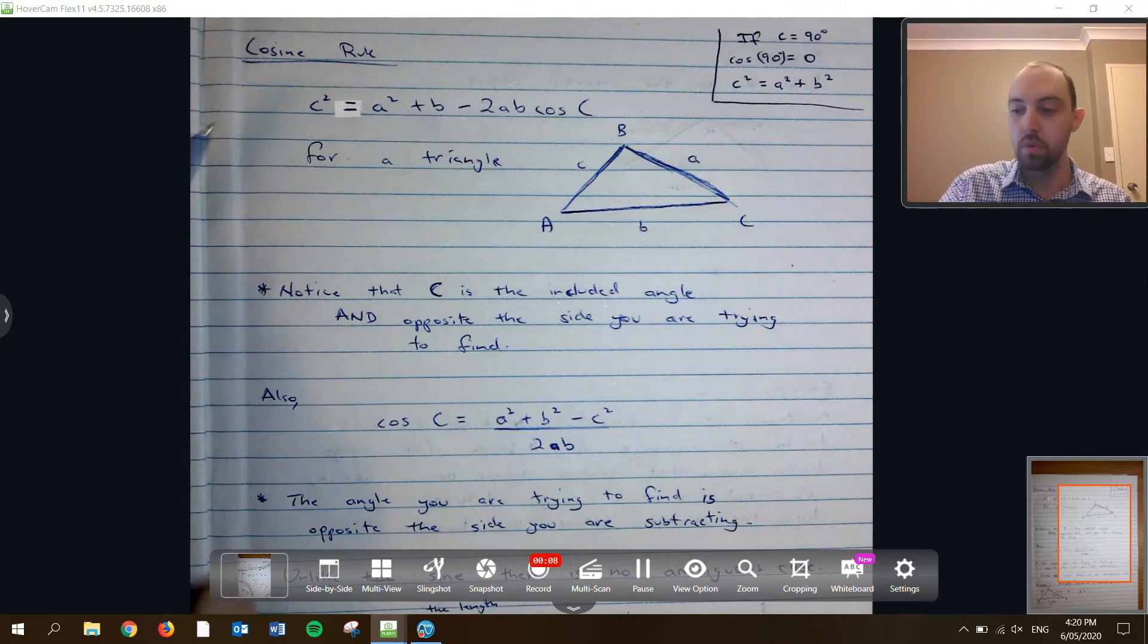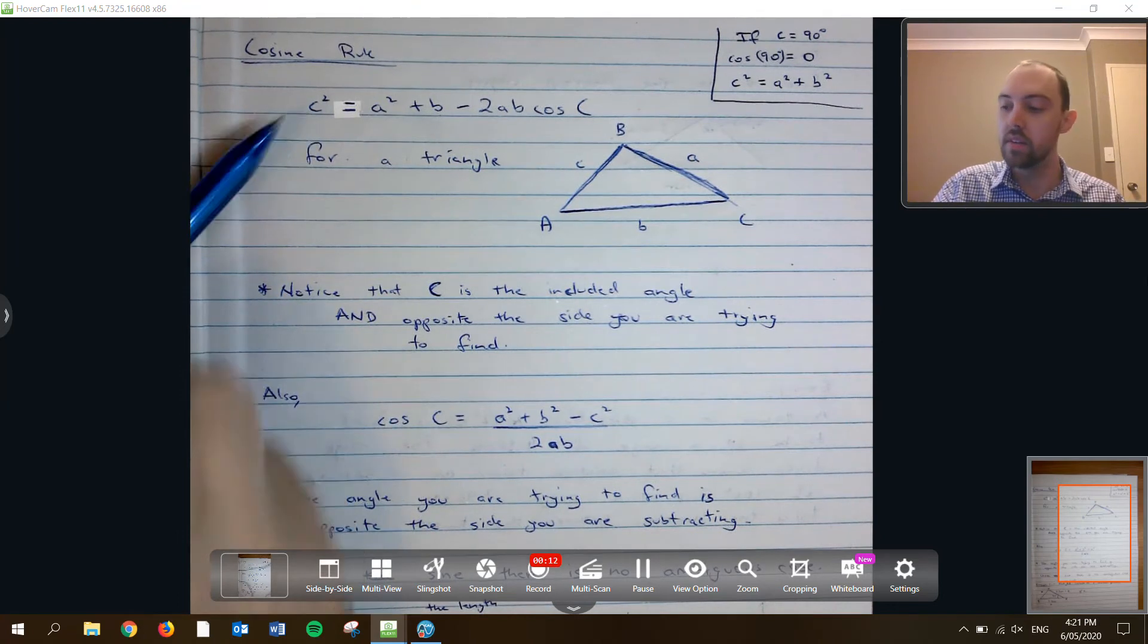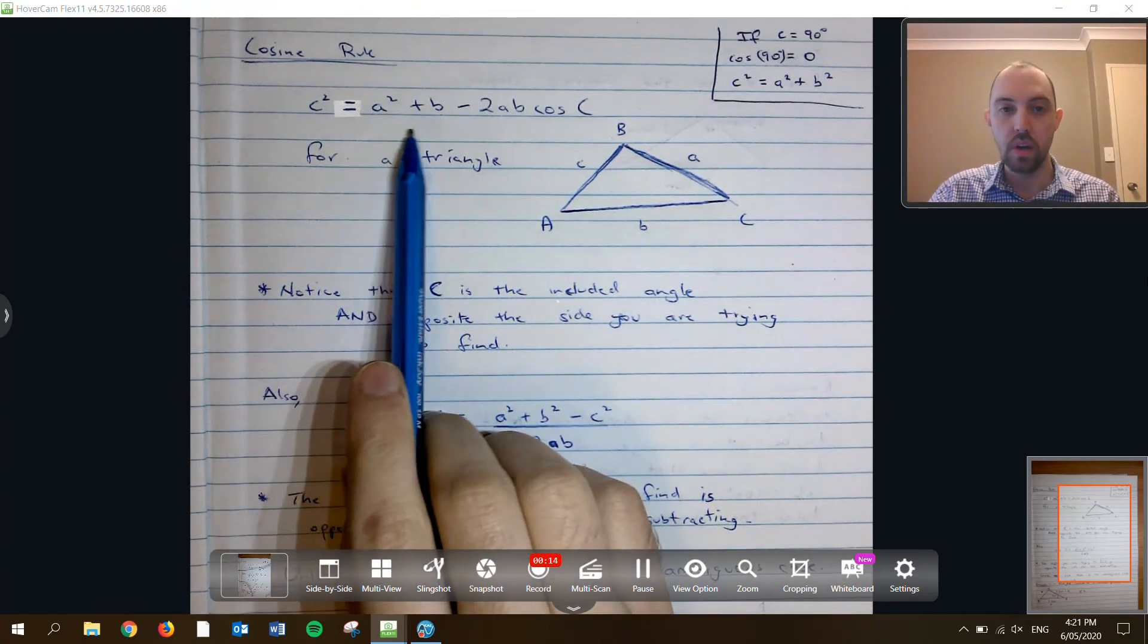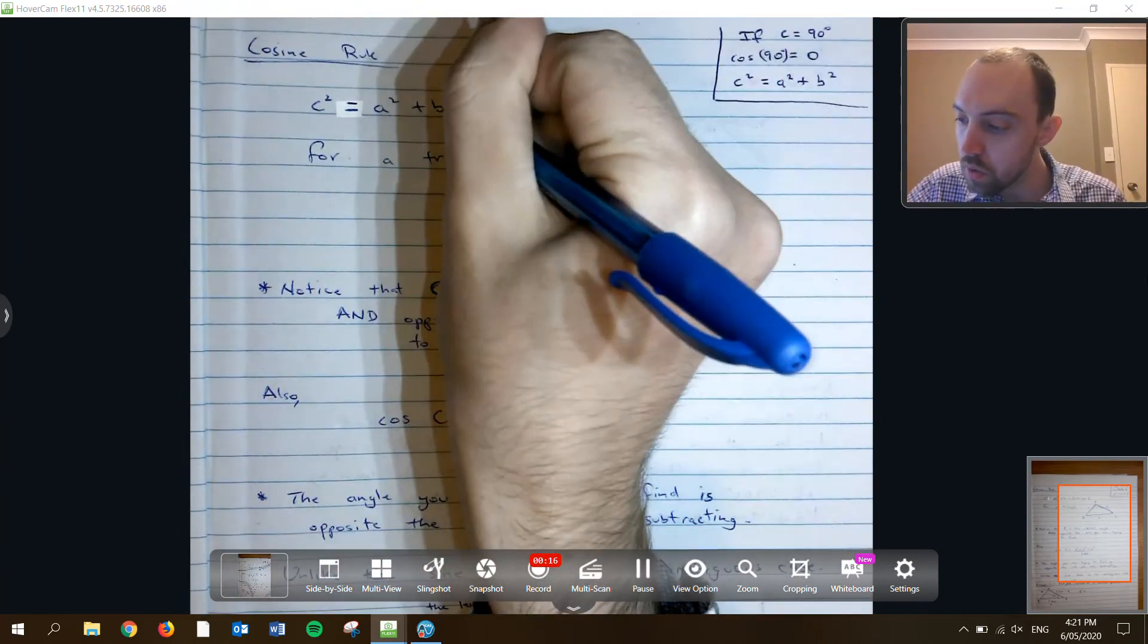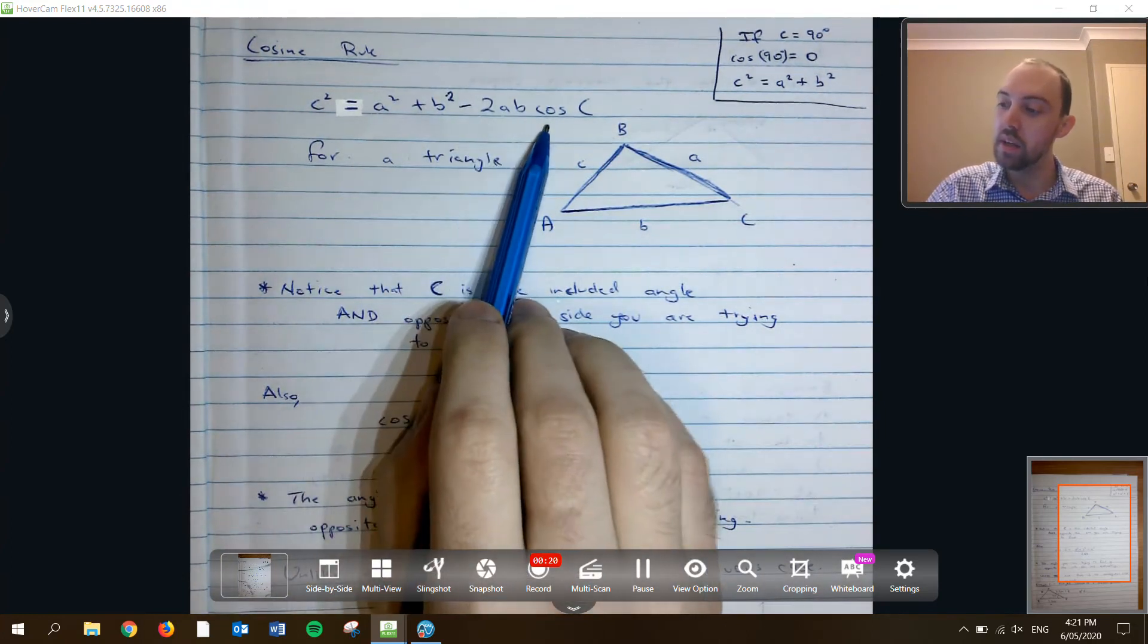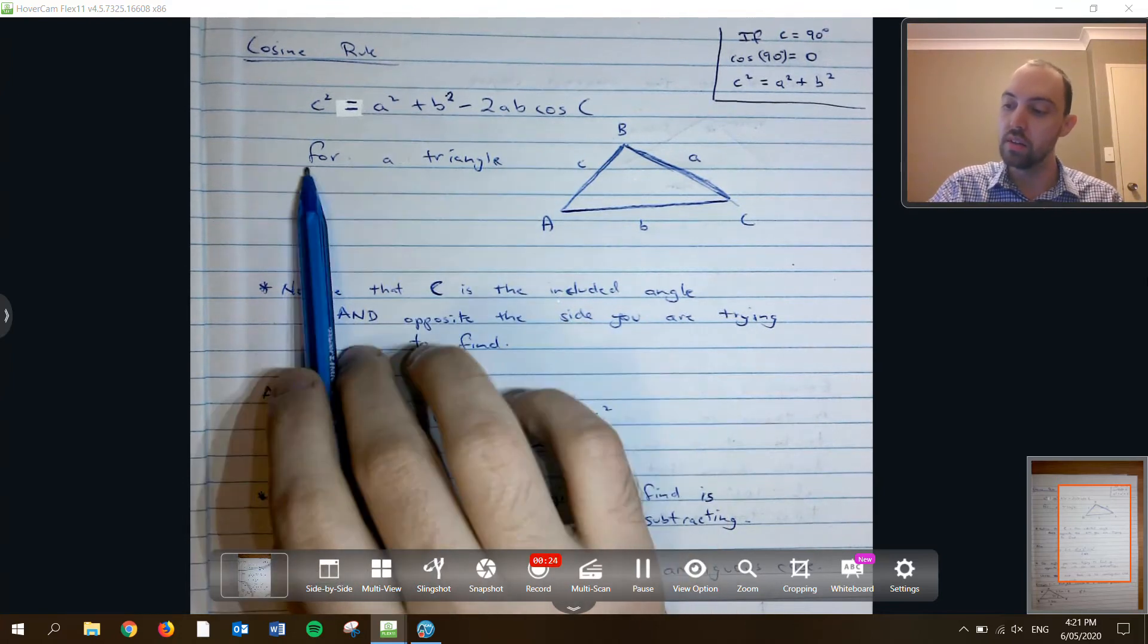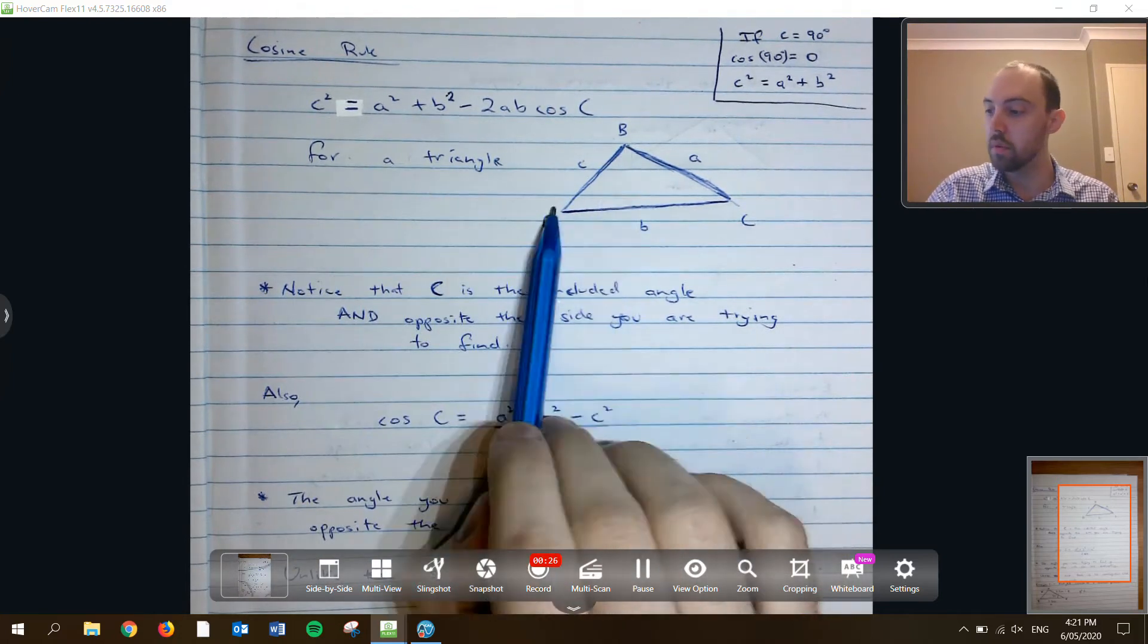The cosine rule which I've written first here is c squared is equal to a squared plus b squared, take 2ab times the cos of c. This is for any triangle, no matter what it looks like.